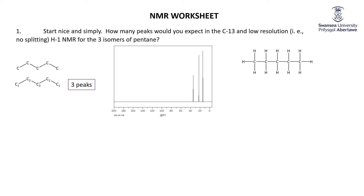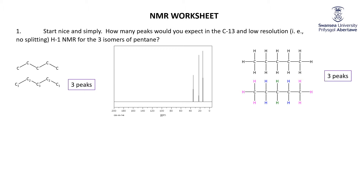As far as the hydrogens are concerned, it's exactly the same pattern. There's no difference between the three hydrogens on carbon one and the three hydrogens on the other carbon one. No difference between the two hydrogens on carbon two and the two hydrogens on carbon two. And then you've got special unique carbon three with its two hydrogens. So we would expect three peaks as well in the low-resolution ¹H NMR.